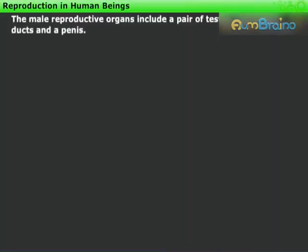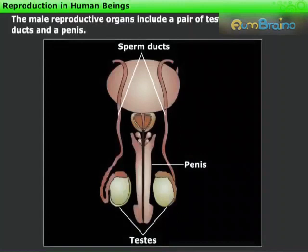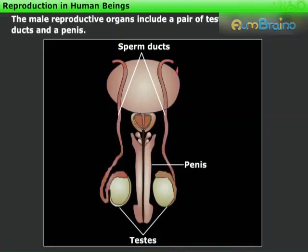Reproduction in Human Beings. We know that the male reproductive organs include a pair of testes, two sperm ducts, and a penis.